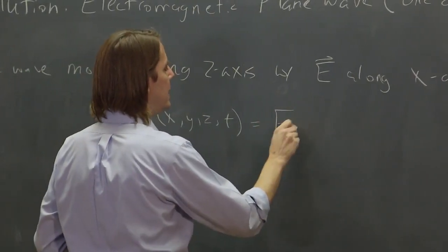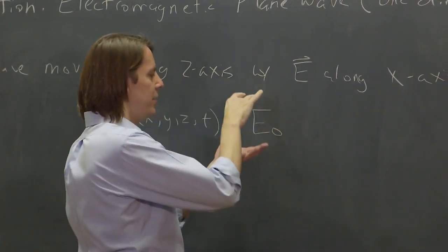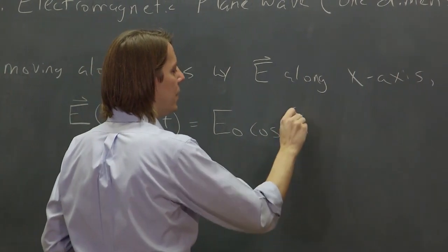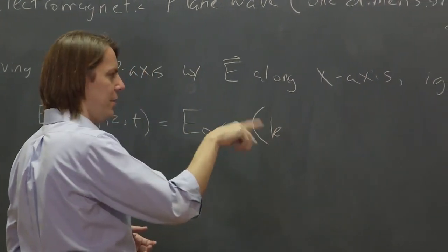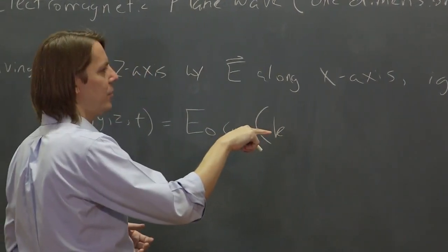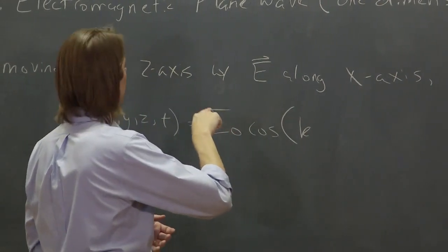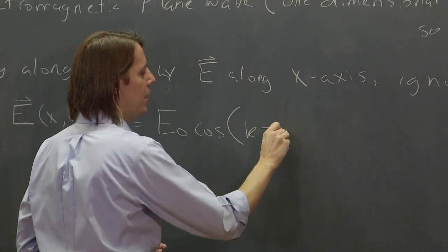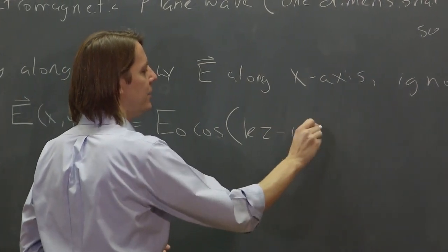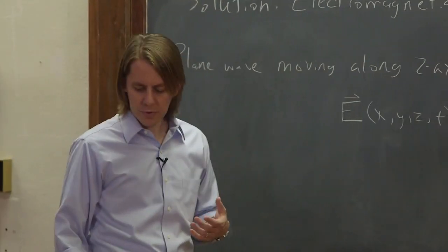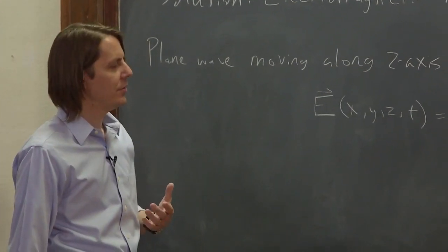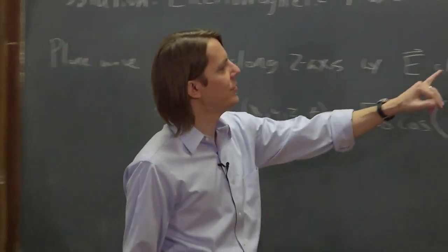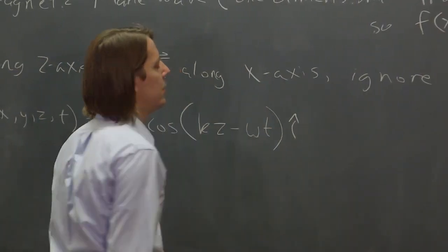So the e-field for all of space and time for this plane wave is equal to e-naught, that's the size of the vector, the cosine, and k, k is the spatial oscillation part. And it's moving along the z, so it's kz minus omega t, because we know that's the form of kx minus vt. And that's in the i-hat direction, because we said it's along the x-axis.